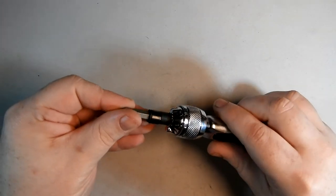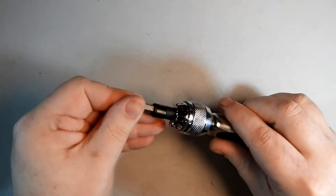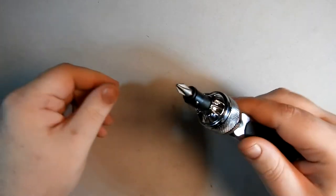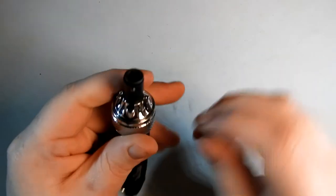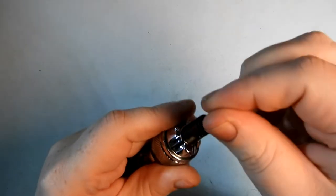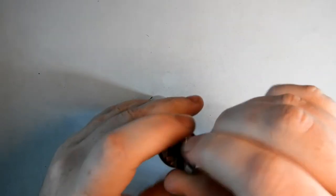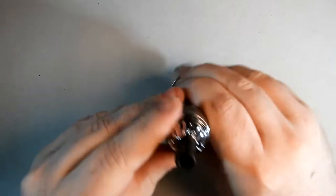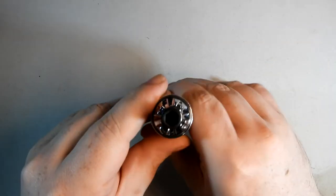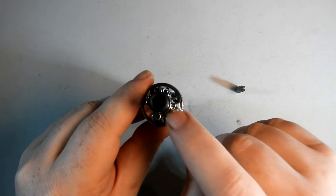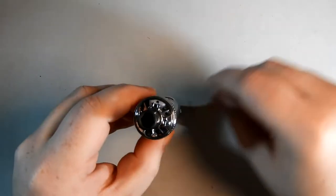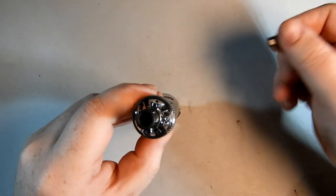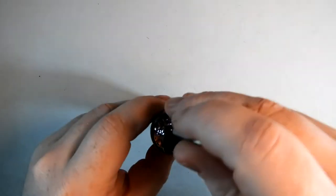It takes standard quarter inch hex bits. The bits are held in with a retaining ball detent here. There's enough space in the bottom to drop a magnet, so I'm probably going to glue a magnet in here and maybe take this retaining thing out because I like magnetic connections—they're quicker and easier.